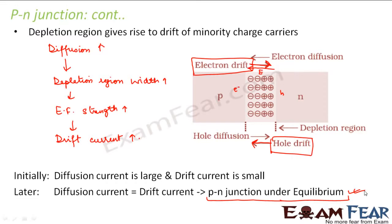A P-N junction is under equilibrium when the width of the depletion region is such that the electric field strength is just enough to overcome the diffusion current. The direction of diffusion current and drift current are opposite to each other. When the electric field strength increases such that the electron drift is exactly equal and opposite to the electron diffusion, there will be no net current — diffusion current and drift current being equal and opposite cancel each other.